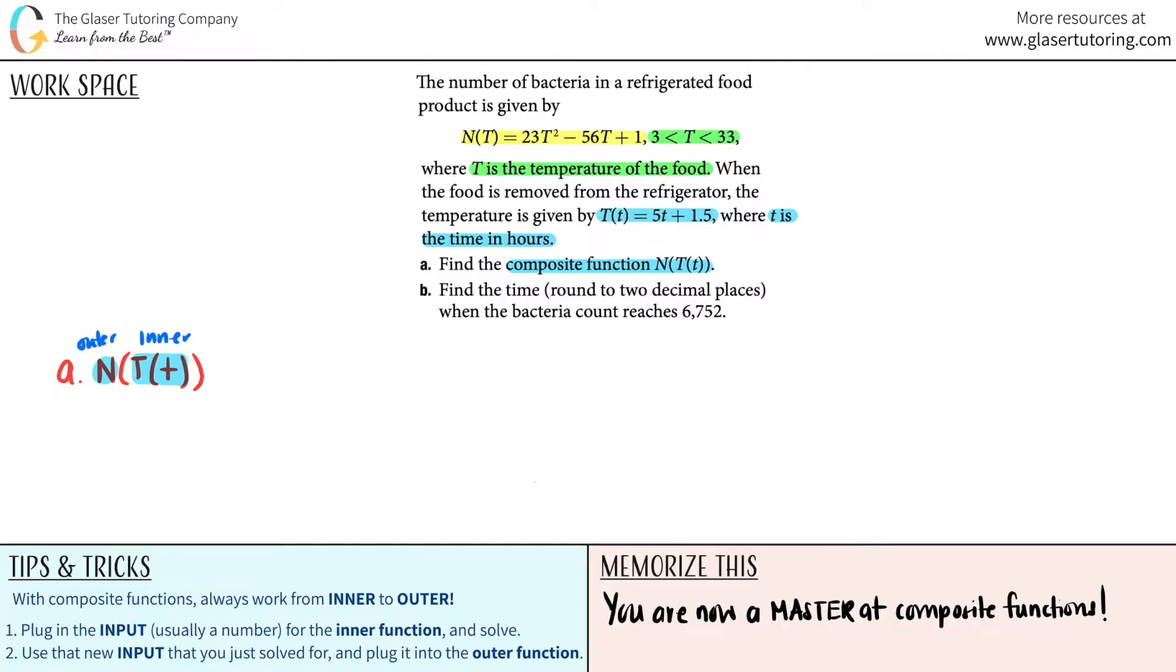For step one, plug in the input, usually a number for the inner function and solve. But here they just gave us T(t), so I can't really solve anything. T(t) = 5t + 1.5, I'm just taking it from this formula. I wasn't given a lowercase t value for time, so I can't do much, so I have to move on.